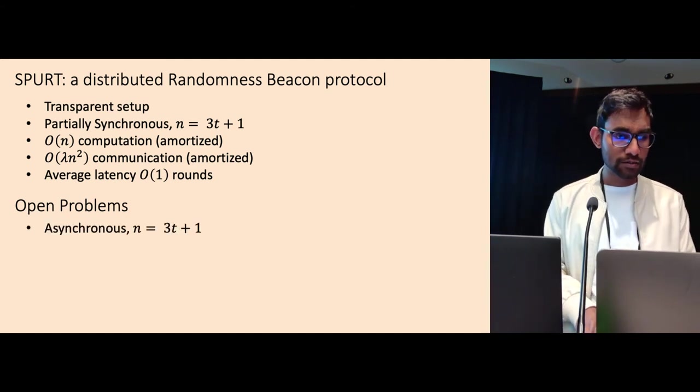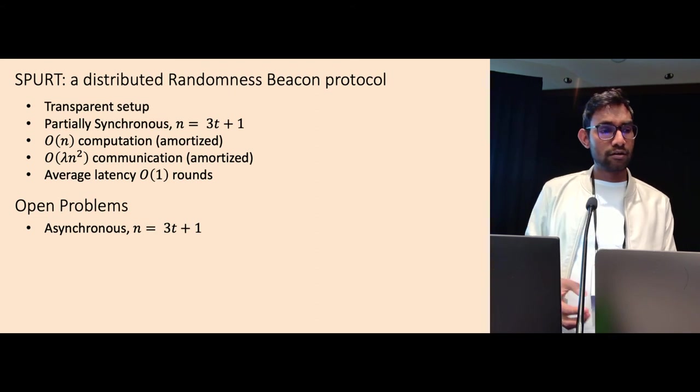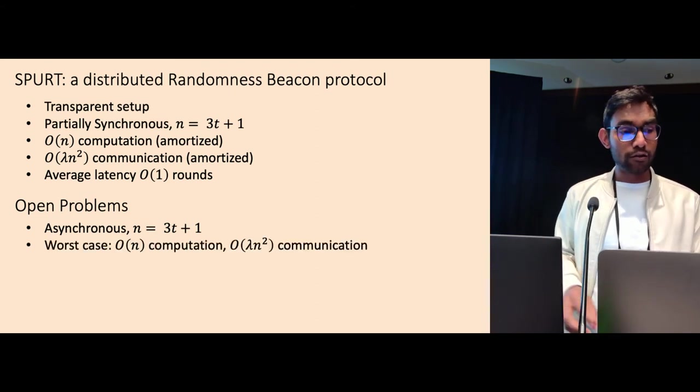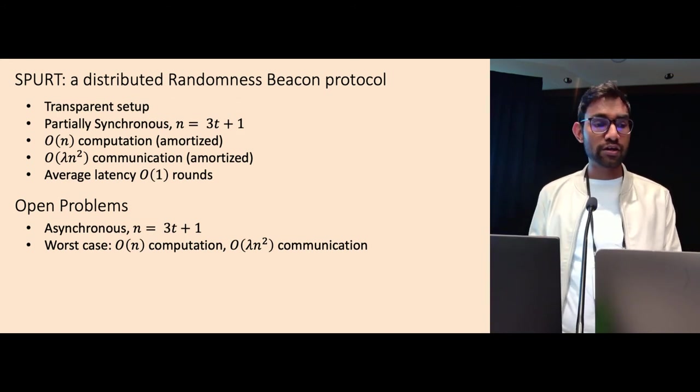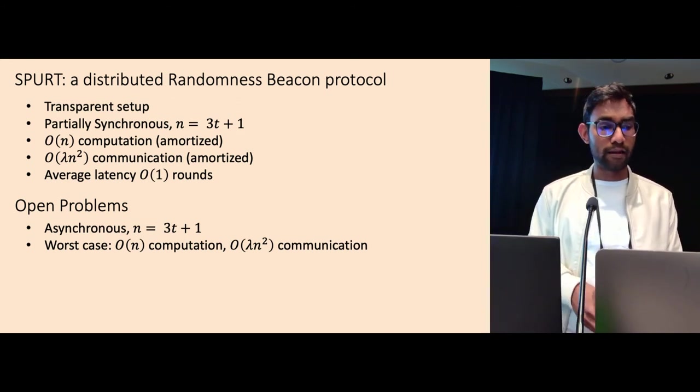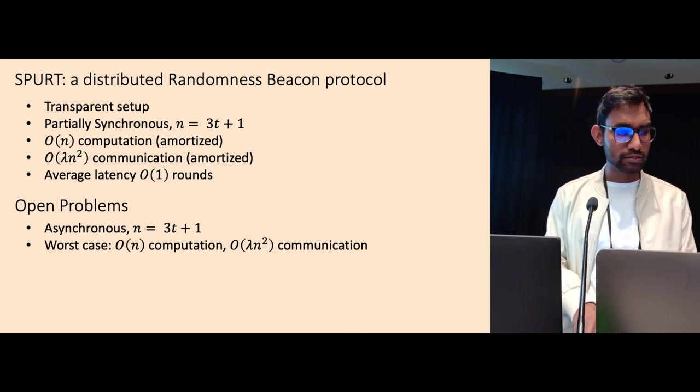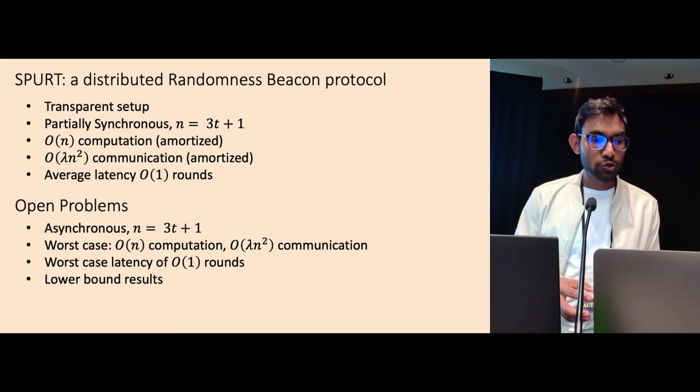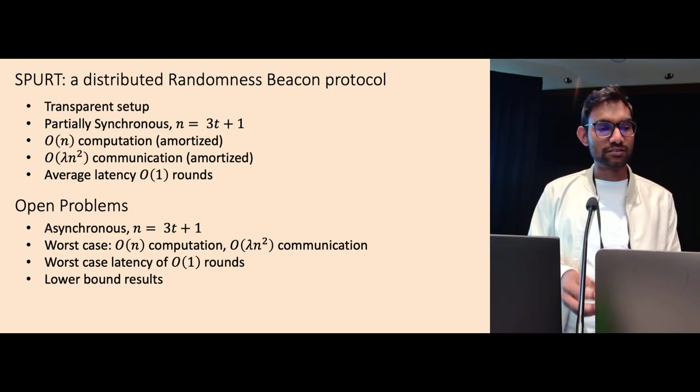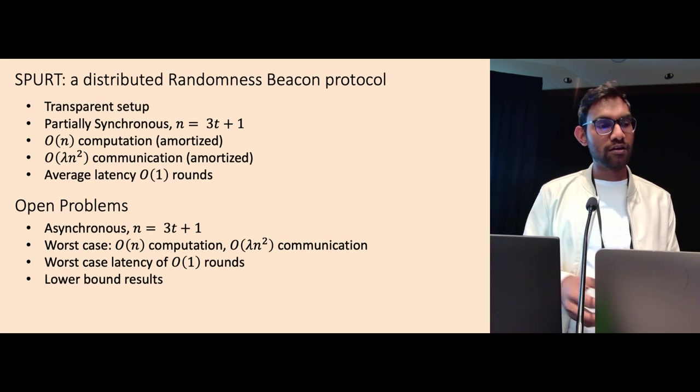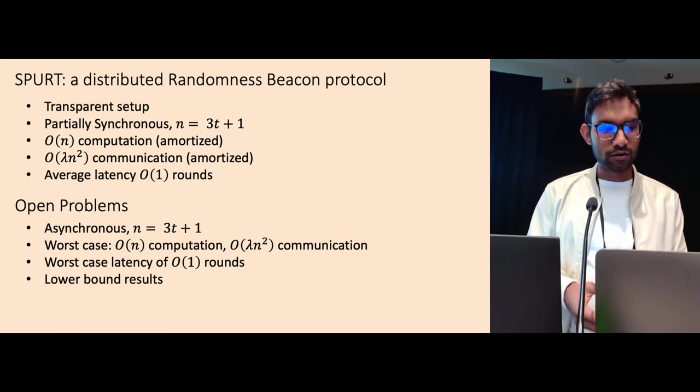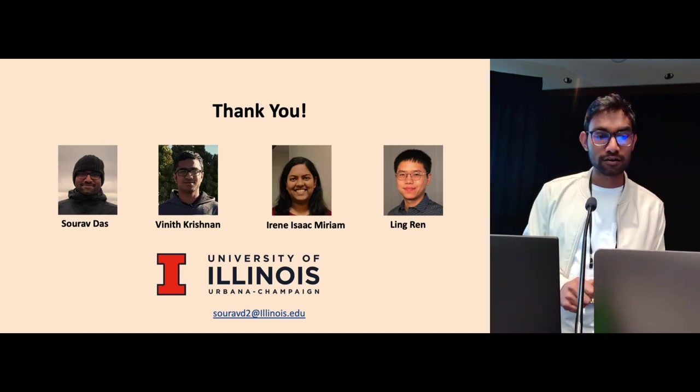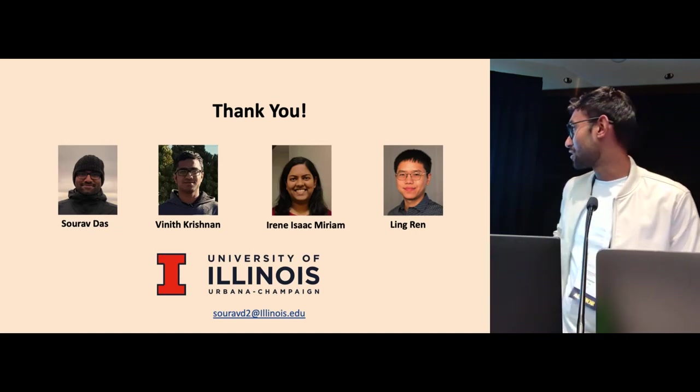So there are lots of open problems. One of the open problems is to design an asynchronous randomness beacon protocol that tolerates the same number of failures and also reduce this computation cost and communication cost to worst case lambda n square instead of amortized and also reduce the worst case latency to order one rounds. And also, we don't know of any lower bound results and I think it's interesting to work on what will be lower bound results on randomness beacon protocols. That's it for this talk and these are my amazing collaborators.